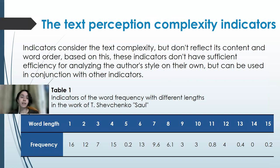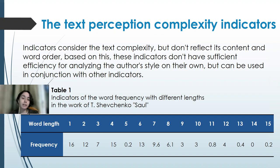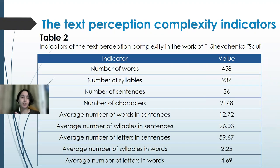The next class is text perception complexity indicators. These indicators consider text complexity but do not reflect its content or word order. Based on this, all these indicators lack sufficient efficiency for analyzing the author's style on their own, but can be used in conjunction with other indicators. On screen, Table 1 shows word frequency by different lengths in Taras Shevchenko's 'Saul', and Table 2 shows other text perception complexity indicators for the same text.